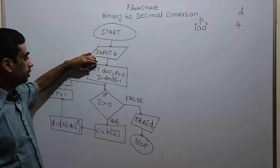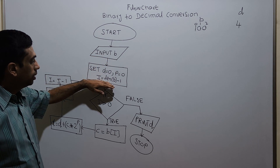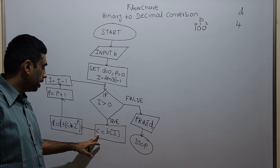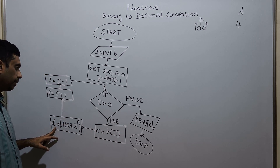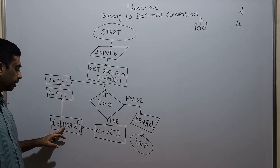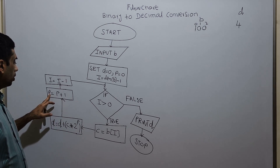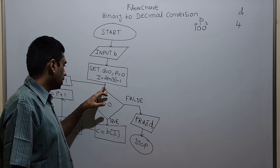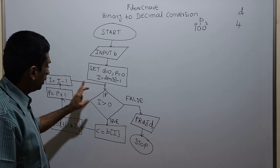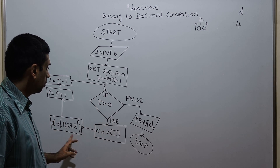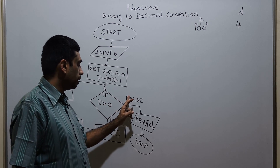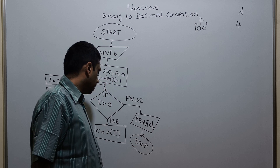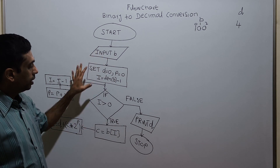I am recapping the values for each variable. D equal to 0, I equal to length of B minus 1. If I greater than 0, I am storing the value of B of I in variable C. Then I am calculating D — D is the decimal value of the given binary value — which equals D plus C multiplied with 2 power P. Then P equal to P plus 1, and I is decremented by 1. The flow chart loops back to the decision statement continuously until I greater than 0 is false, at which point I print D and end the flowchart.